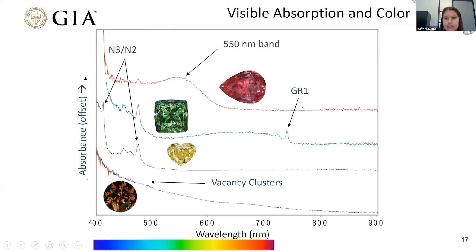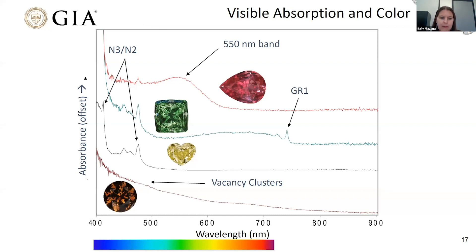Looking at many diamonds, we can see the variety of possible spectra — all the defects from earlier slides. Some produce sharp peaks, such as the N3, N2, or GR1, and some are broad bands. Each spectrum is different and diagnostic for its cause of color. All of these spectra are collected at liquid nitrogen temperature — 77 Kelvin or minus 196 degrees Celsius — by submerging the diamonds in liquid nitrogen. Diamond's very low coefficient of thermal expansion makes this safe, and doing so sharpens the peaks, which would otherwise be much broader and flatter at room temperature, allowing precise wavelength identification.